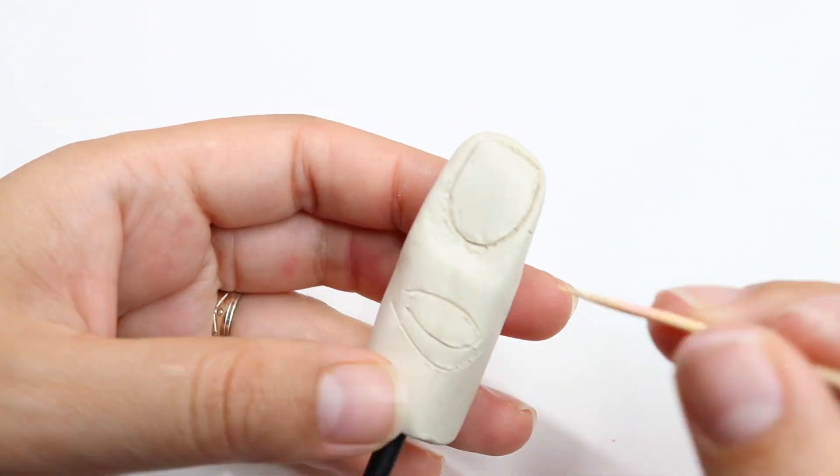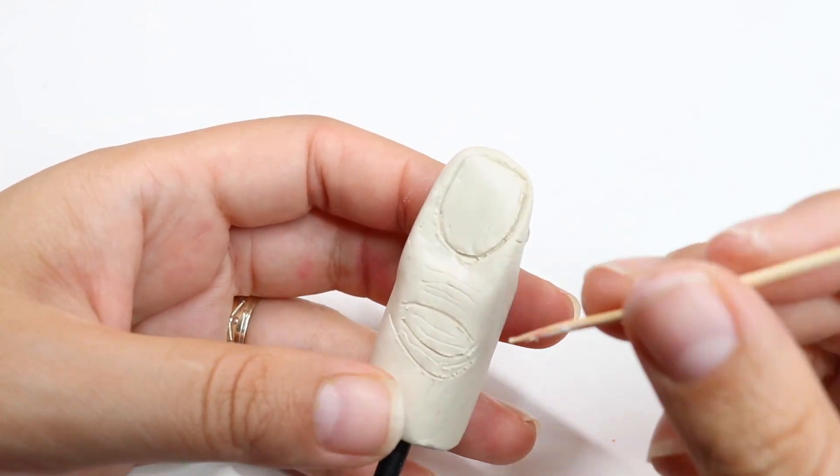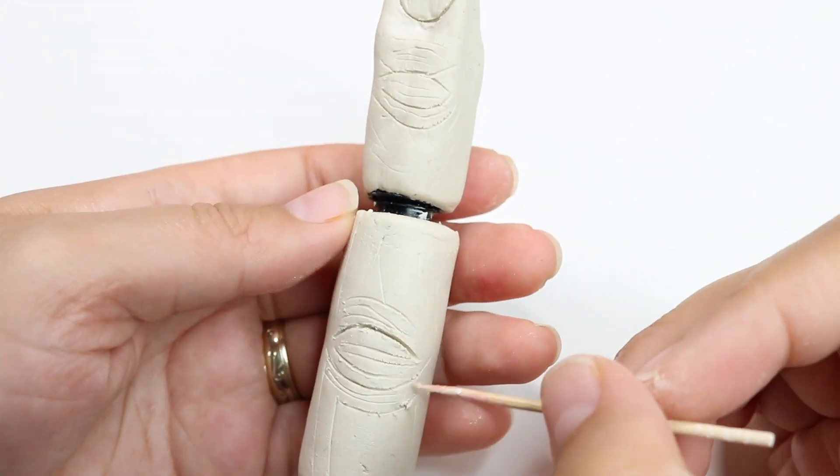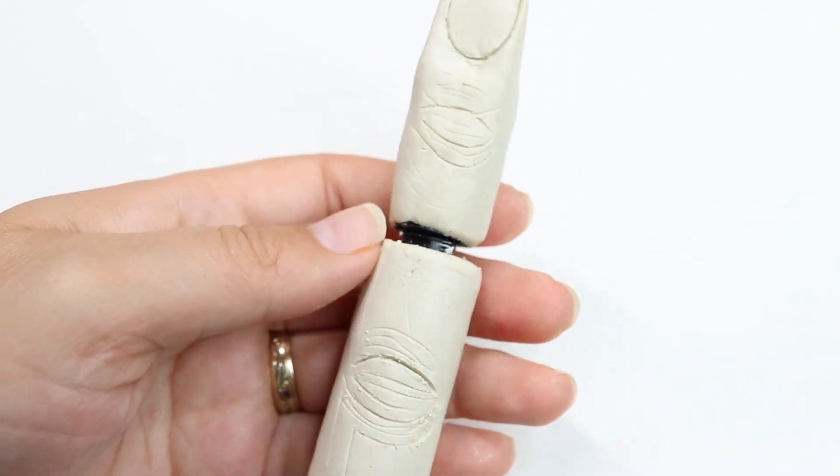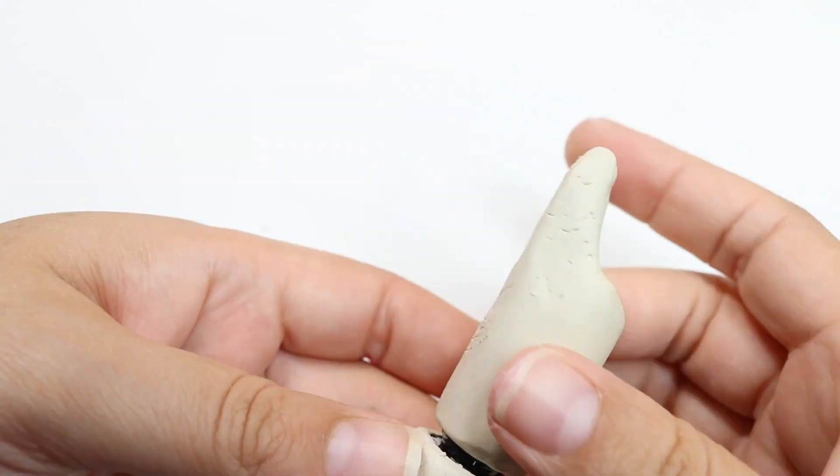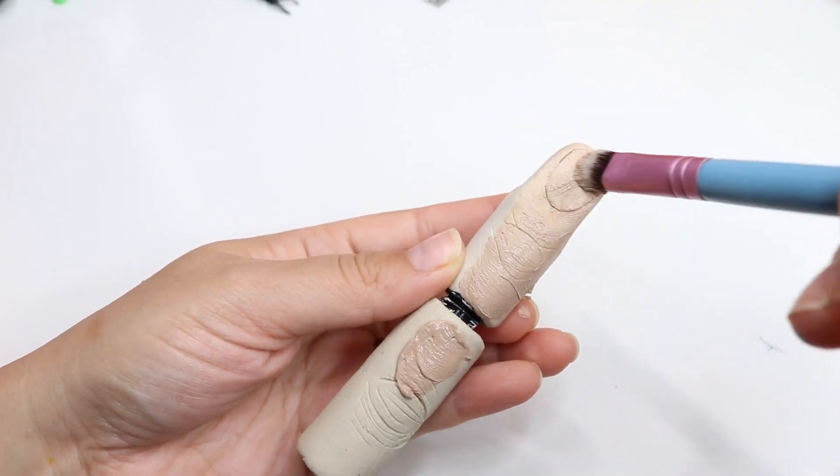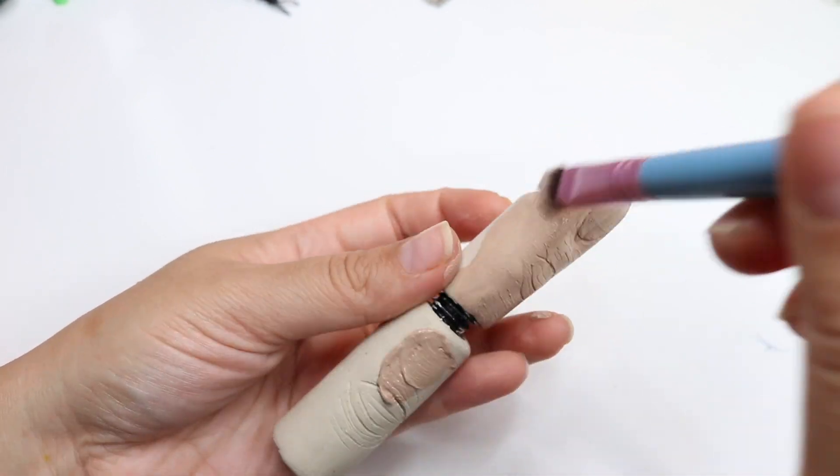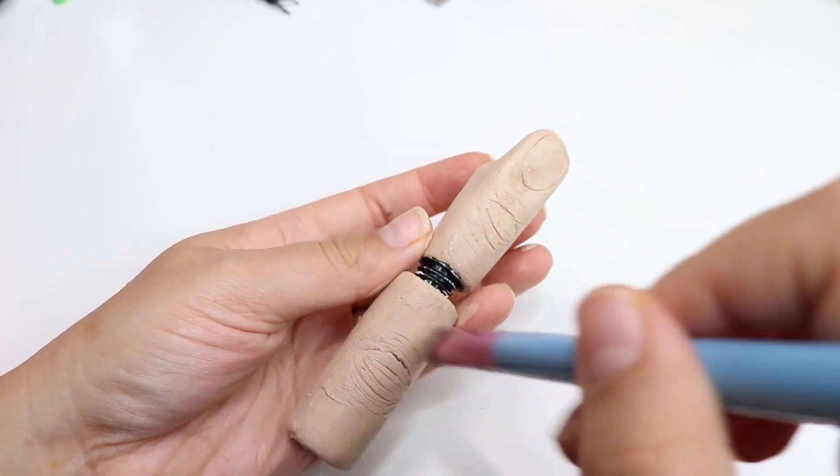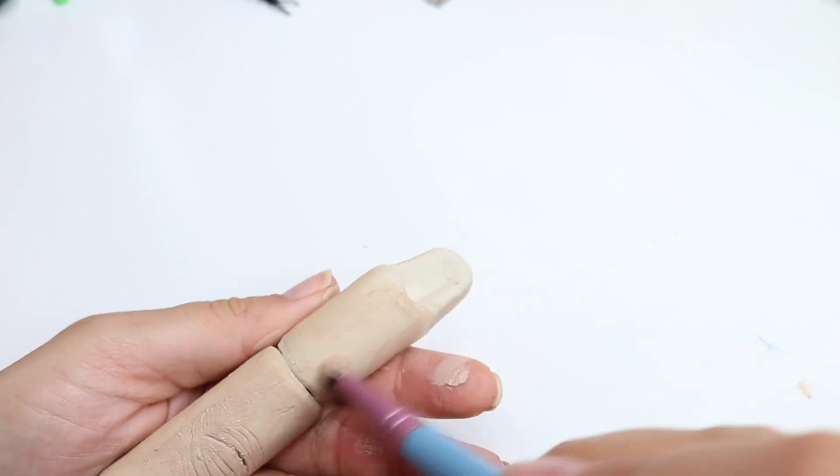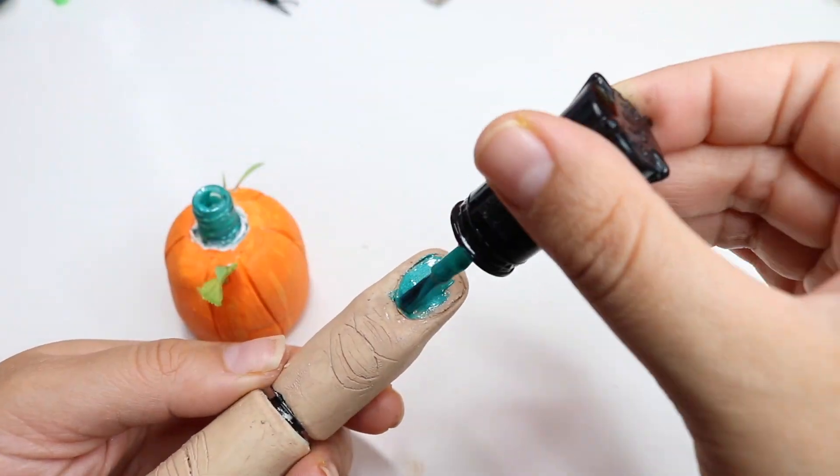Then with a toothpick I started drawing in the lines. After that you're going to let it air dry. Once it's air dry you can paint it with acrylic paint or nail polish. What I did is I also painted the nail and then added red nail polish just to make that effect of blood. Then I also added a bit of grey and that is all guys.